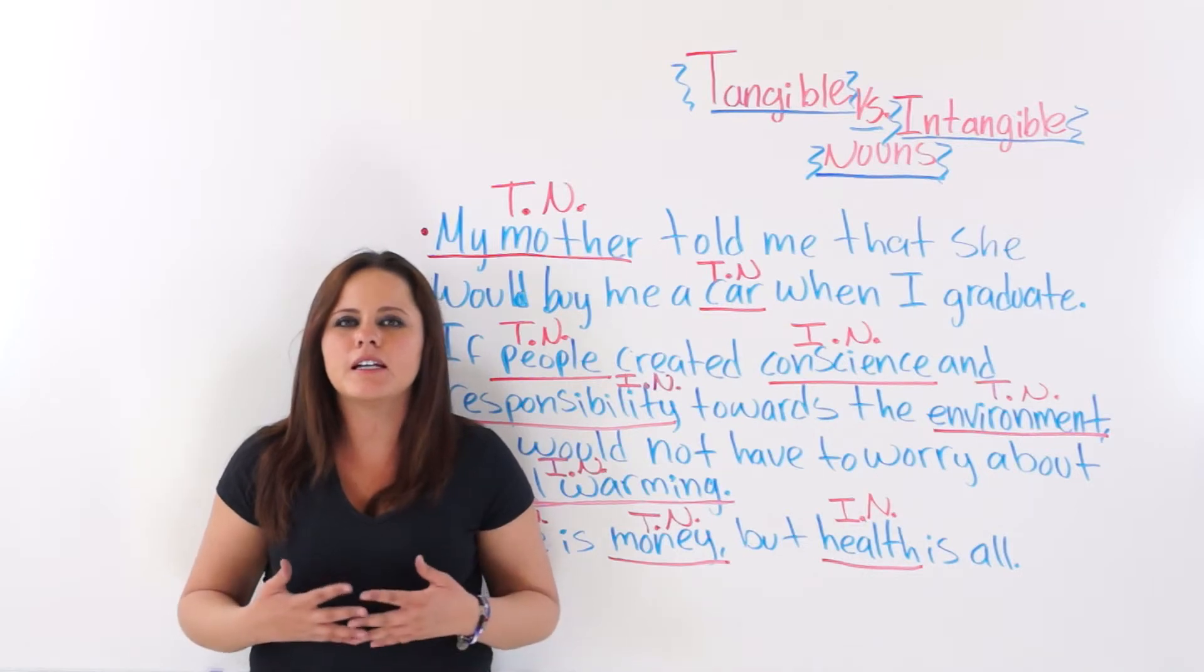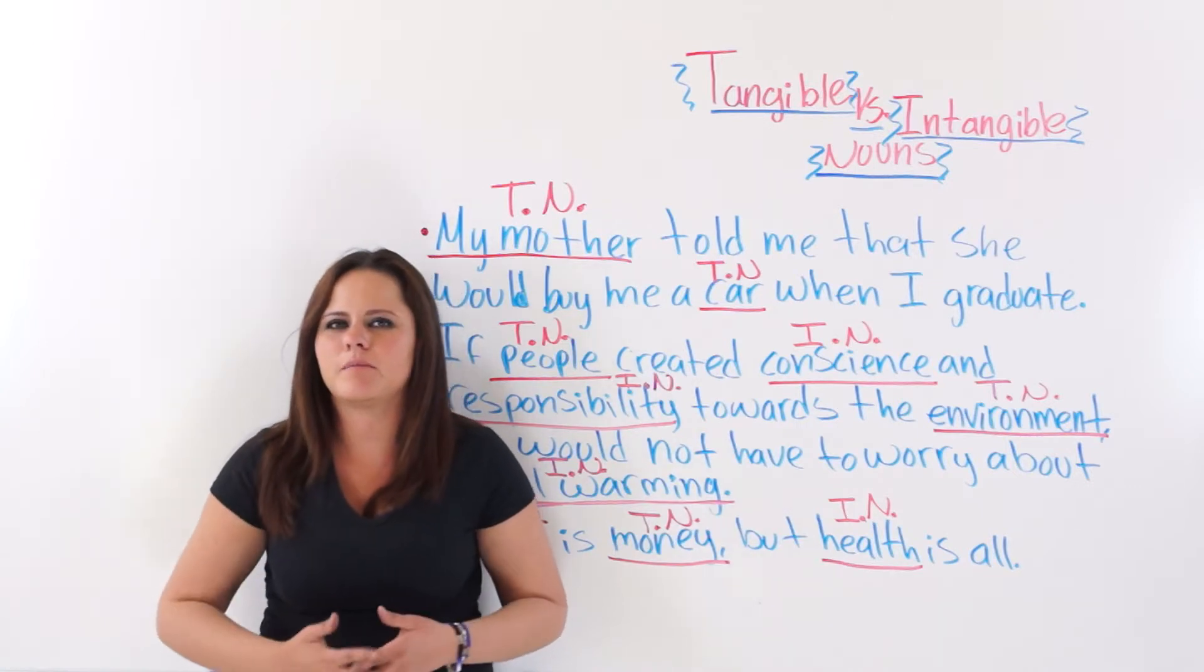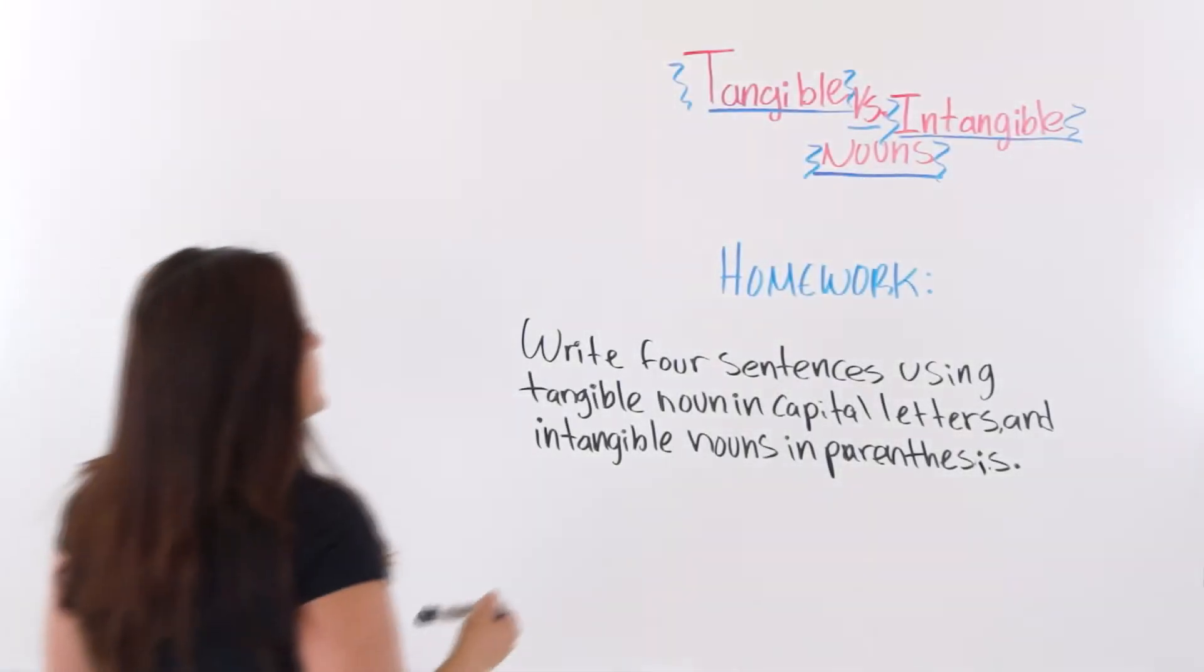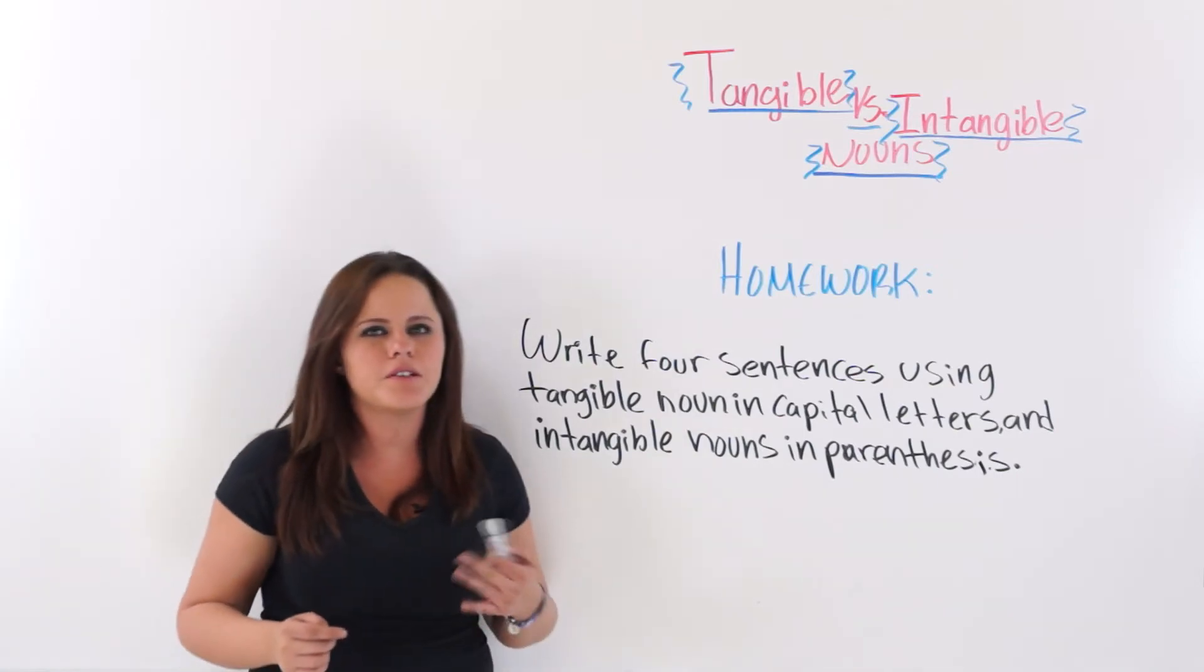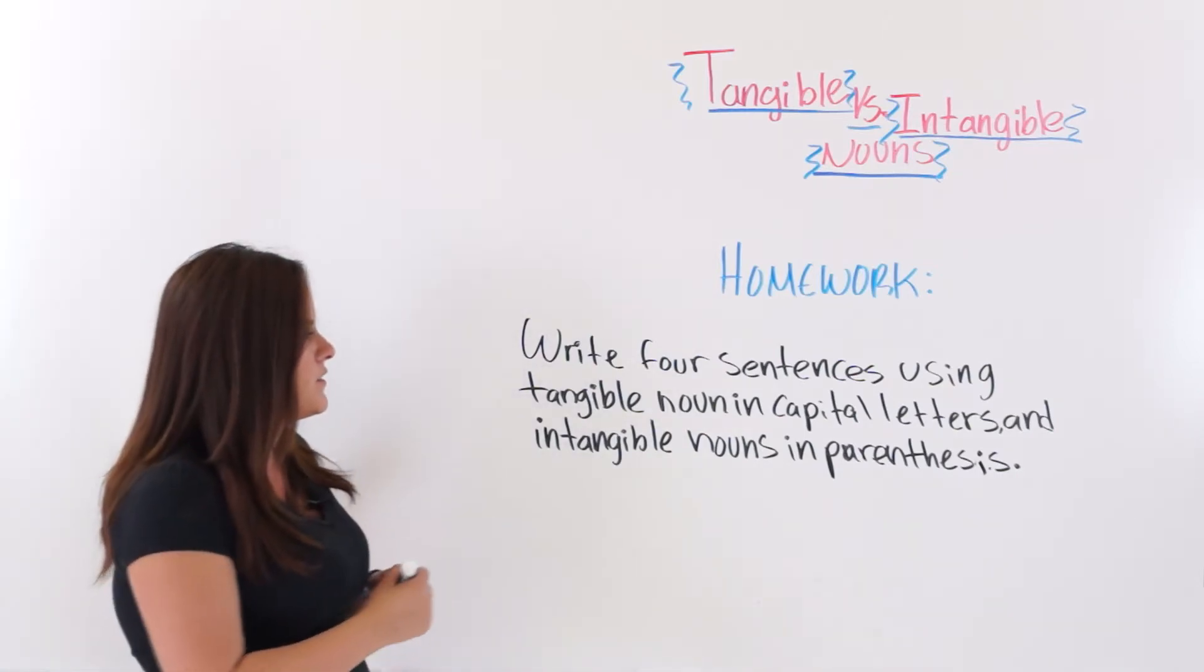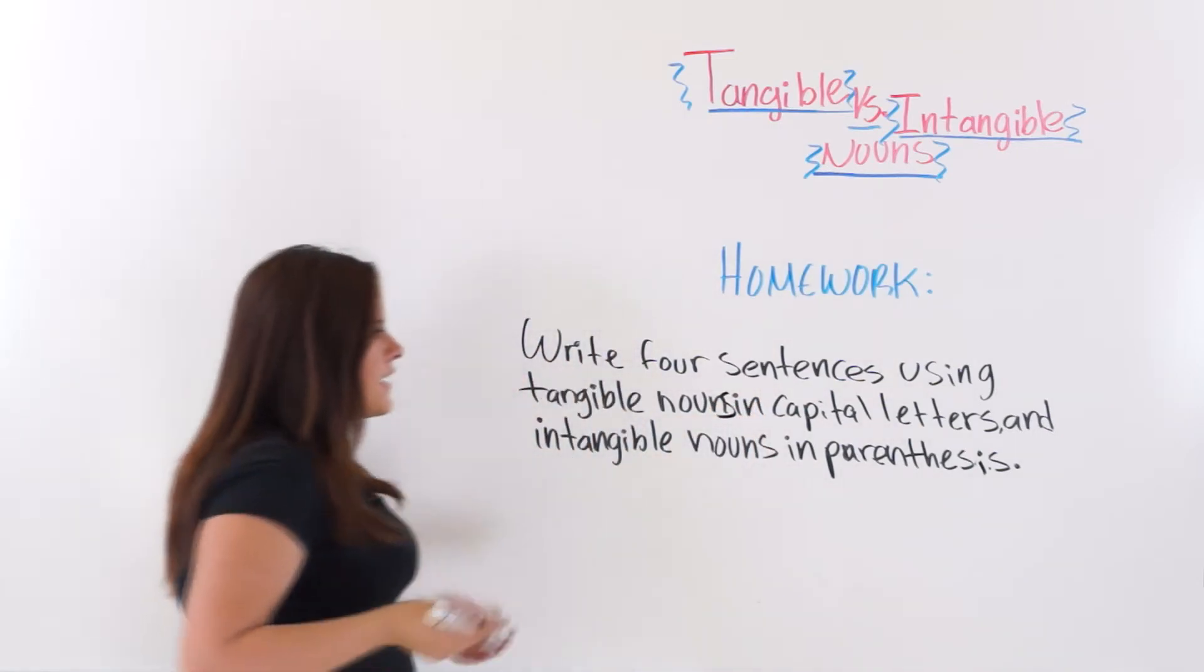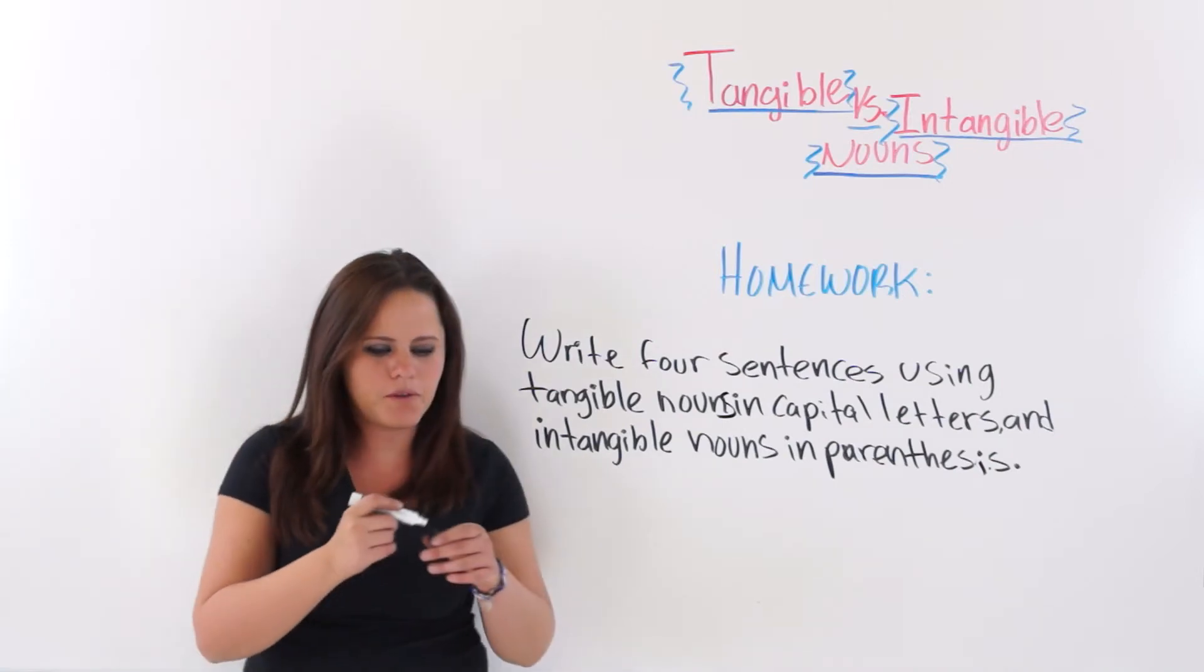You got to go in there and play, so practice and be perfect. For homework, for homework, you are going to write four sentences using tangible nouns—and I forgot the S here, I'm sorry—tangible nouns in capital letters and intangible nouns in parentheses.